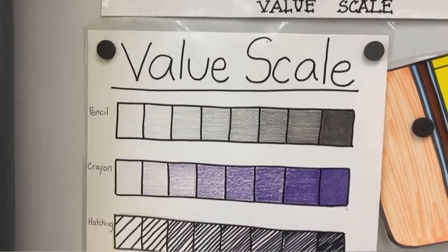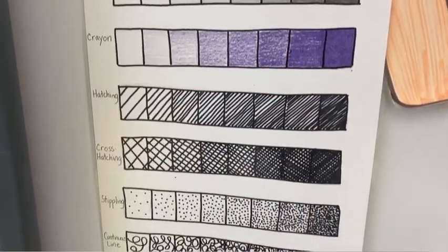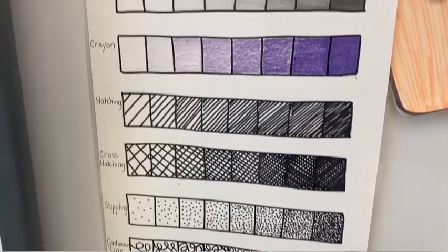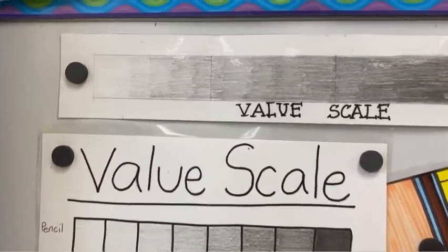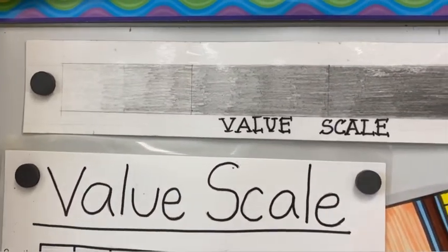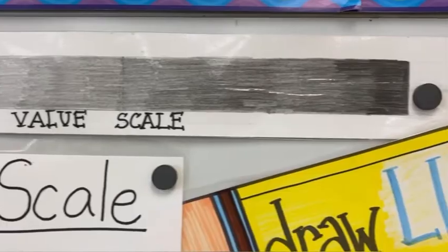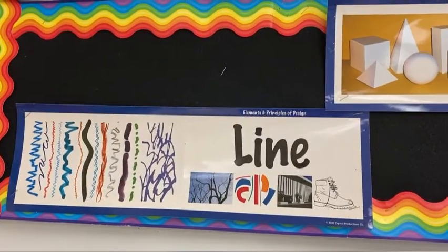Another thing you're going to hear me talk about a lot is the value scale, or showing value. Value is the lightness or darkness of a color. I'm always going to ask you to show value.